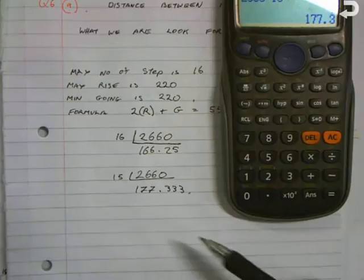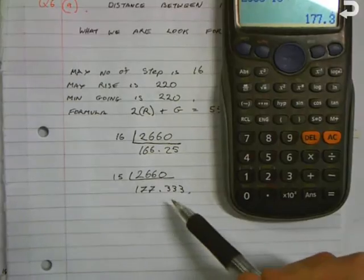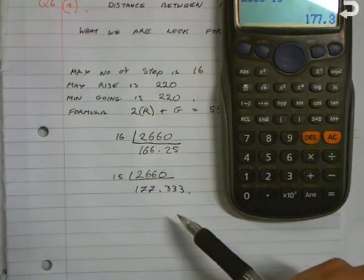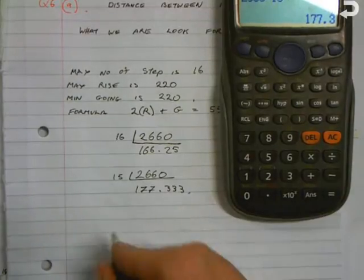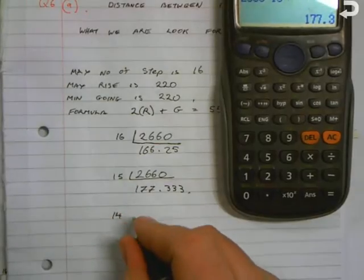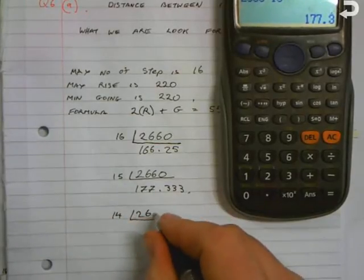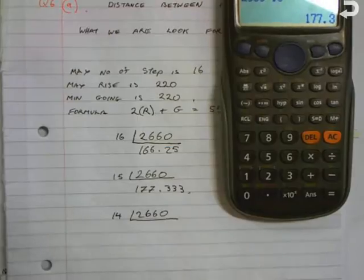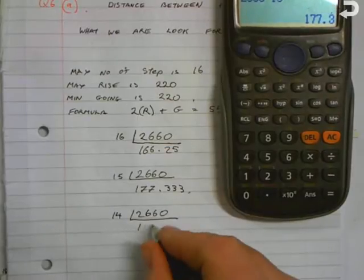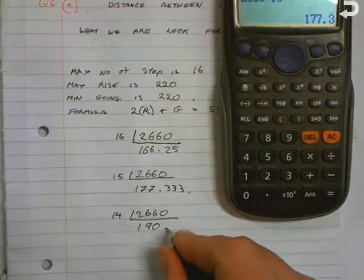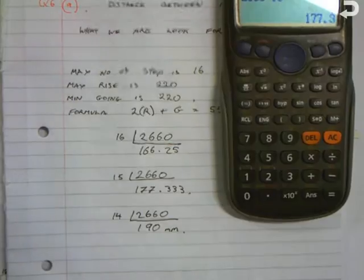Again, quite difficult to cut a piece of timber into a third of a mil. So we'll go 14, and the answer we'll get for that is 190 mils exactly. So this is looking like a measurement that we could use.